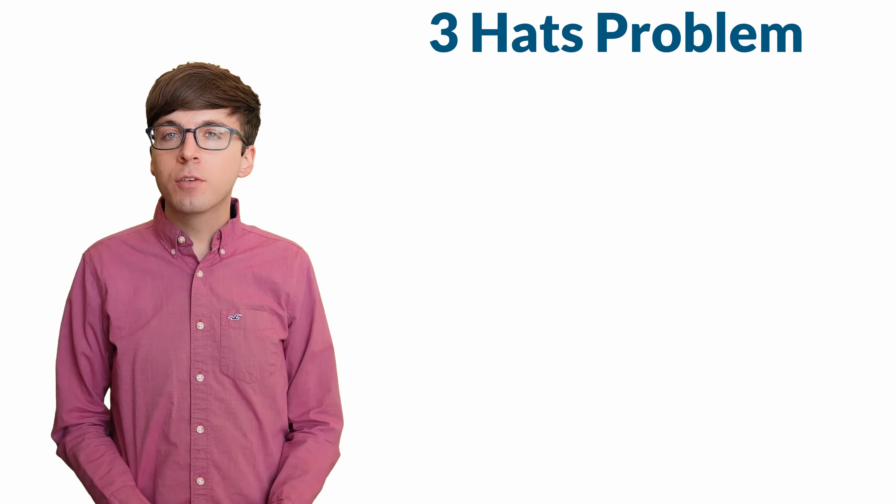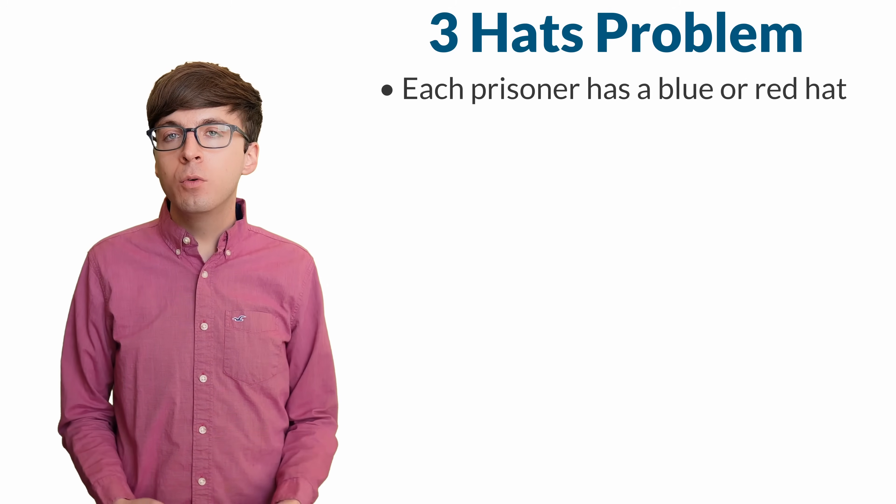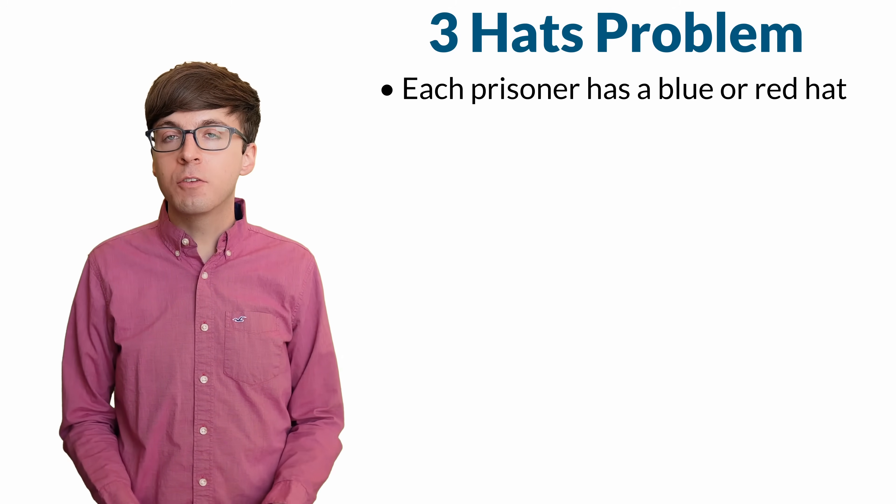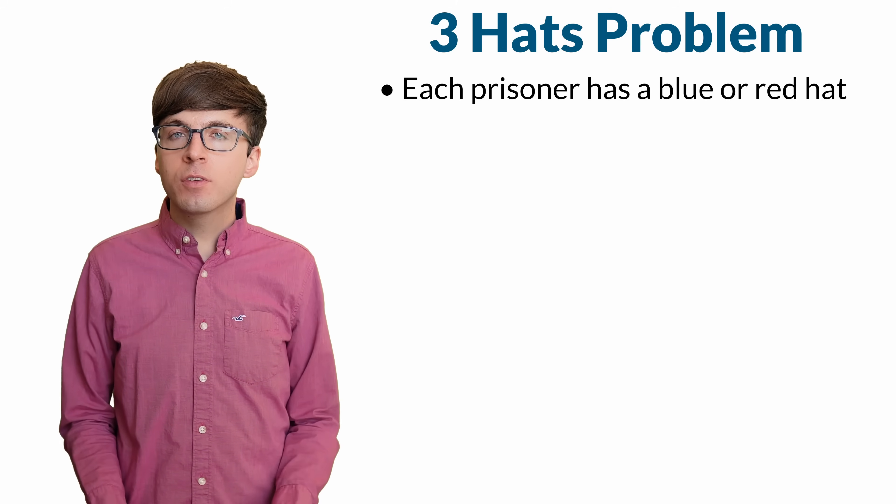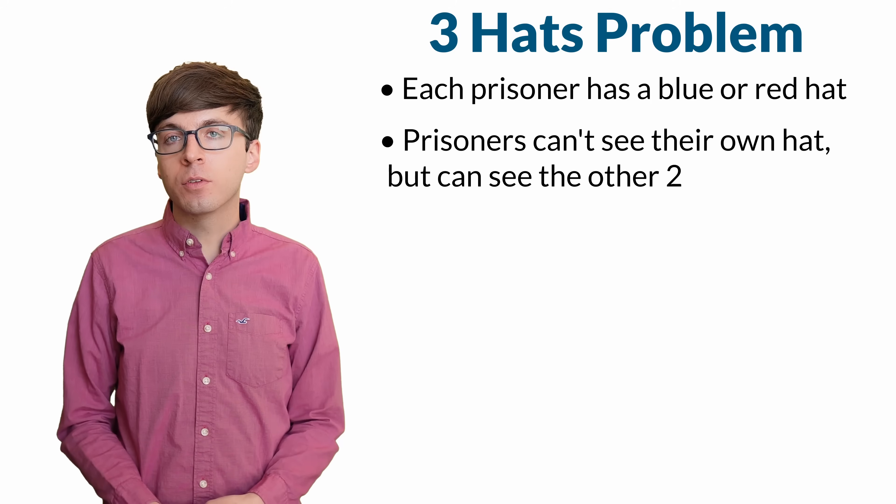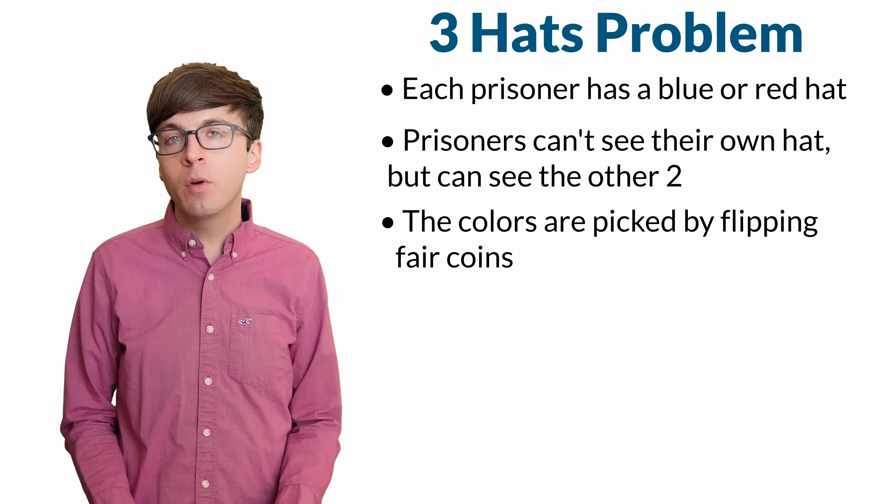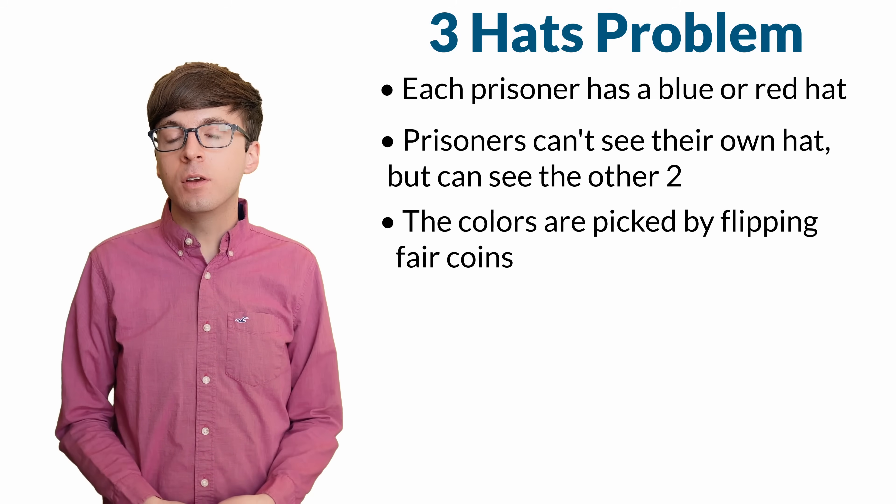There are three prisoners who are given a chance to win a game for their freedom. A blue or red hat will be placed on each of their heads. Each prisoner can't see their own hat, but they can see the other two prisoners' hats. The colors of each hat will be determined by fair coin flips, so each color is equally likely.